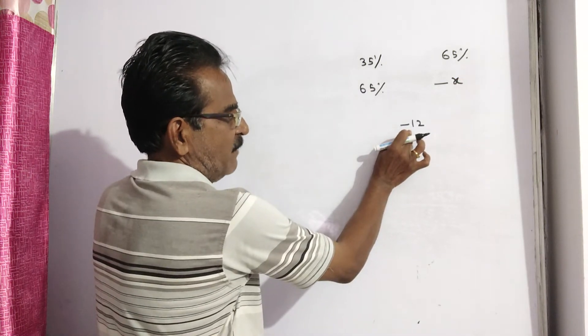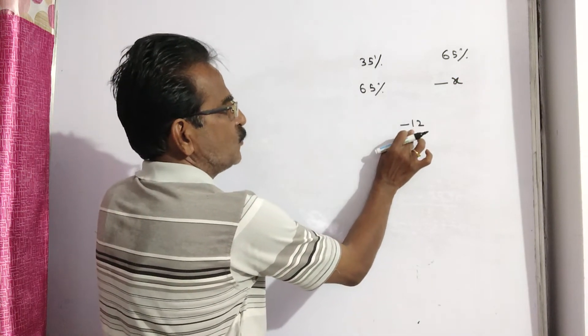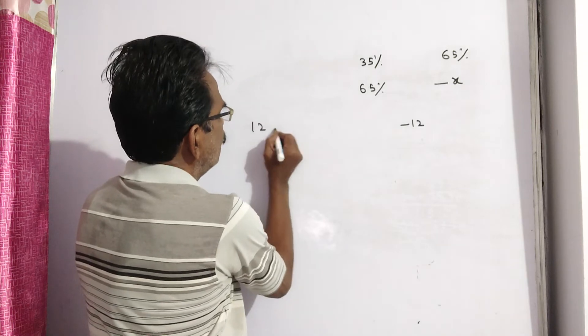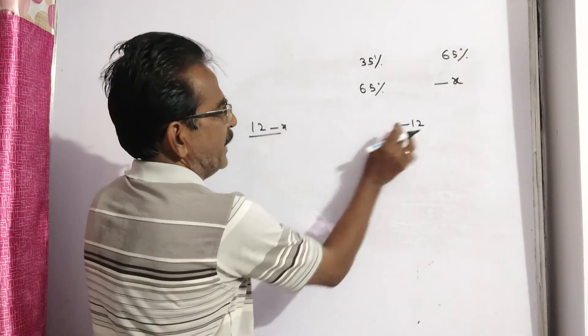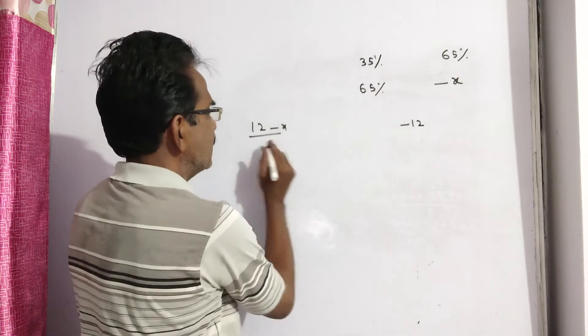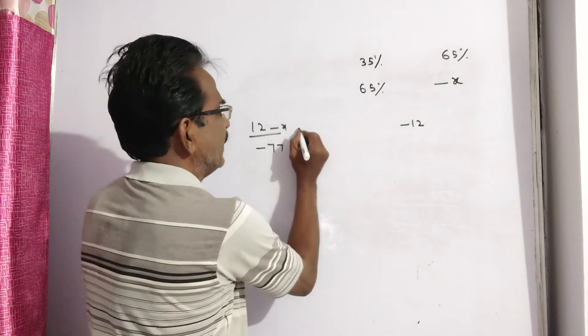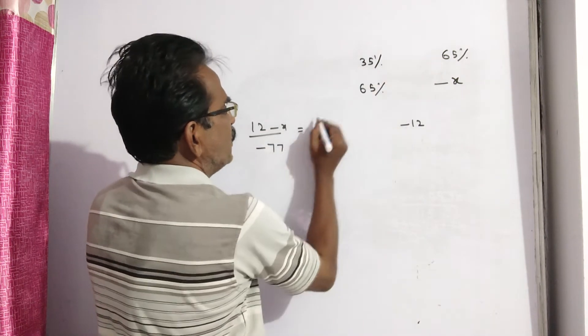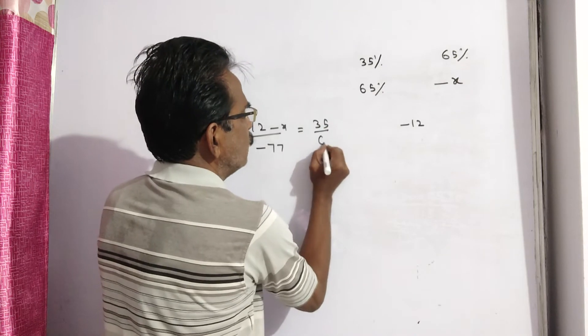Minus x minus of minus 12, plus 12, that is 12 minus x by this minus this. Minus 12 minus 65, minus 77, is equal to 35 is to 65.